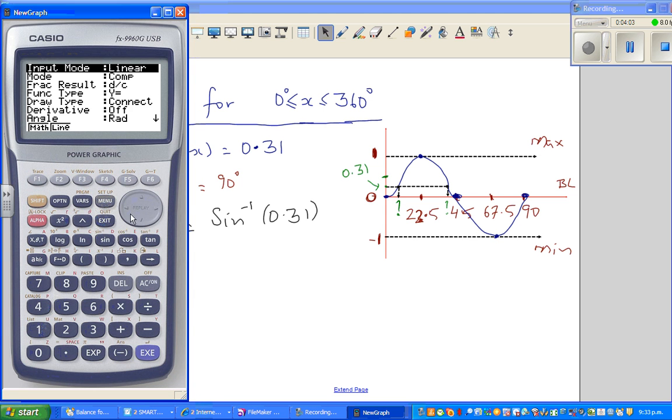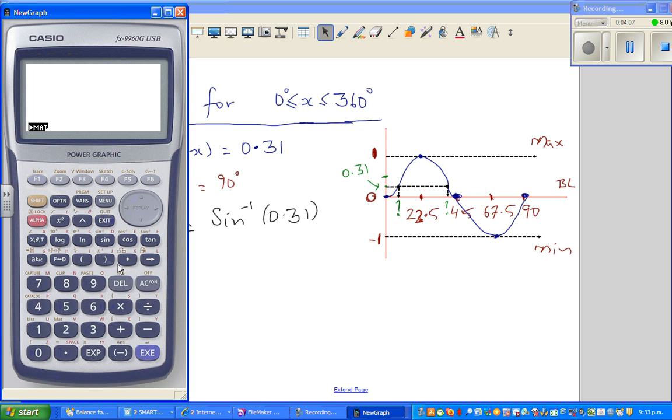I'll set it in degrees first. Degrees, and then I go shift sine of 0.31. Close the bracket. I should have put a bracket here.